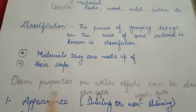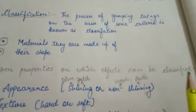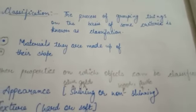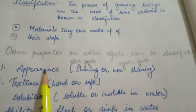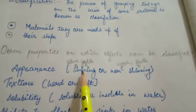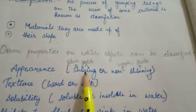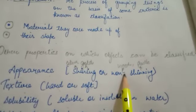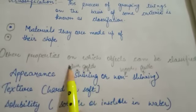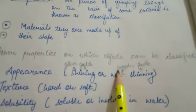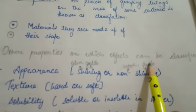Now, there are other properties on which objects can be classified. The first one is appearance — means ki joh object hai, woh dikhne mein kaisi hai. It is shining or non-shining. Shining means like silver or gold; non-shining means wood and plastic.